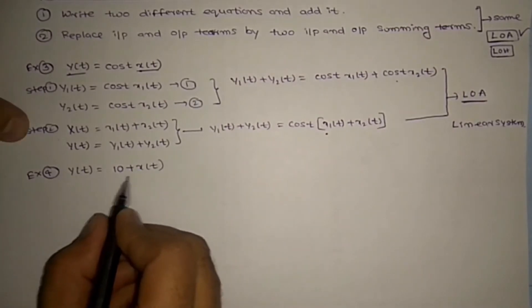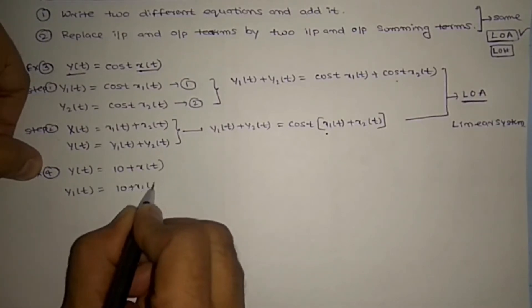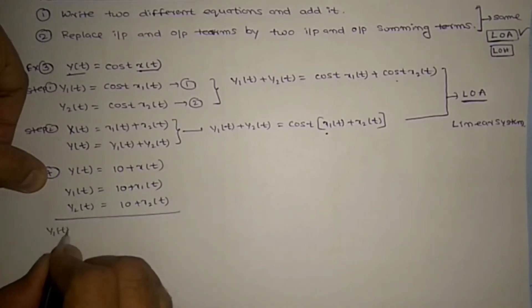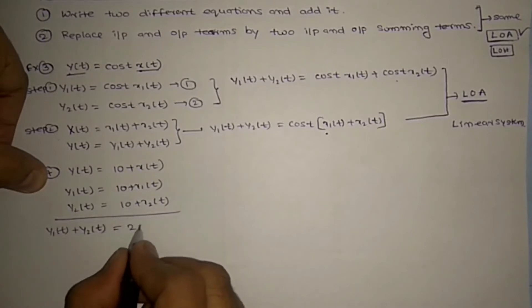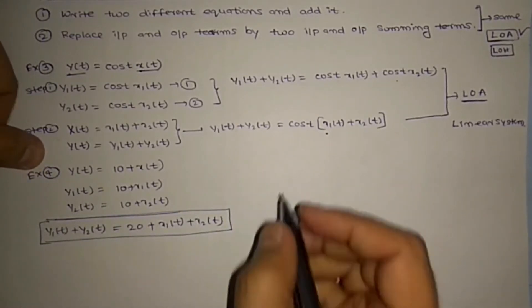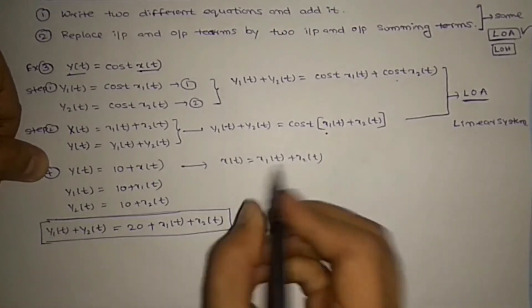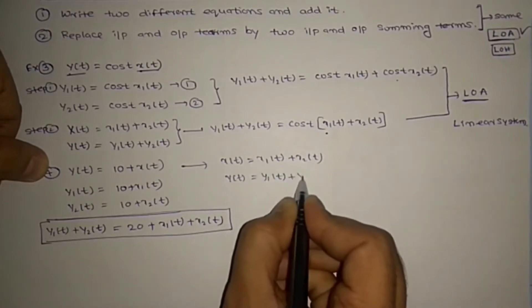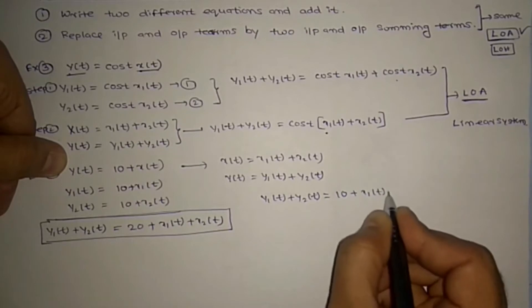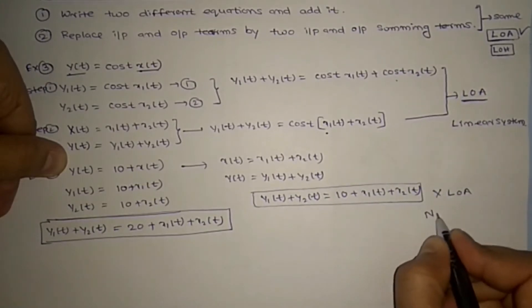Example 4: Y(t) = 10 + X(t). Write two equations: Y1(t) = 10 + X1(t) and Y2(t) = 10 + X2(t). Adding them: Y1(t) + Y2(t) = 20 + X1(t) + X2(t). Step 2: replacing gives Y1(t) + Y2(t) = 10 + X1(t) + X2(t). These two are not the same (20 vs 10), so it does not satisfy the law of additivity. It is a non-linear system.